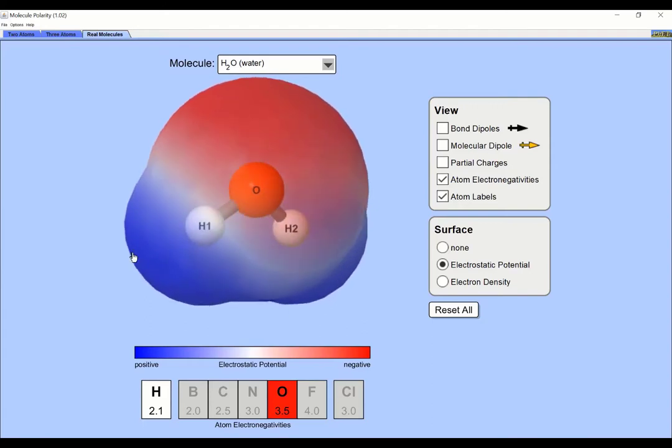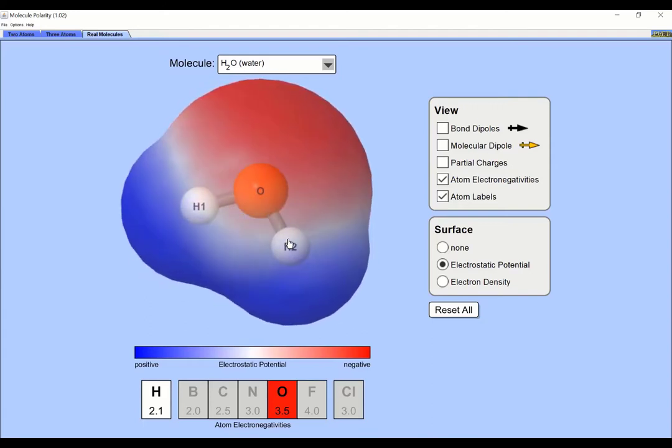Because electrons are negatively charged, the oxygen itself effectively takes on a slight negative charge, while the hydrogens, which are a bit electron deficient because the electrons keep zipping off to spend time with the very attractive oxygen, have a slight positive charge.